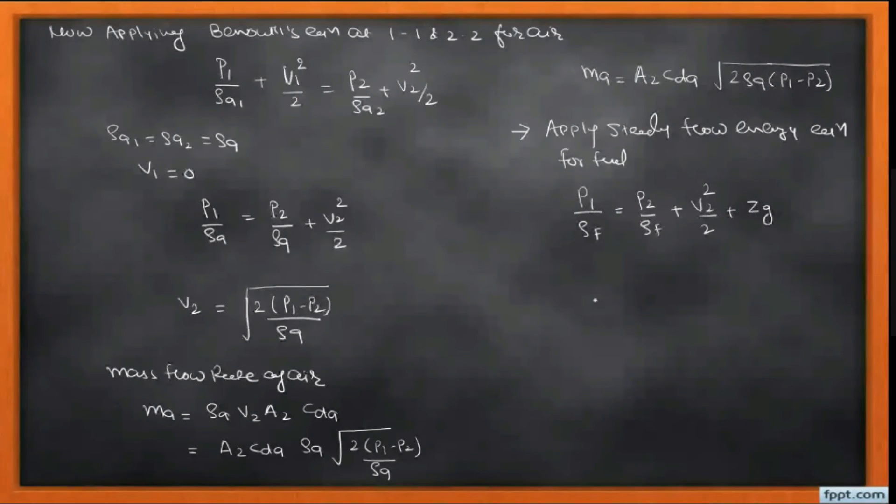Now we make the subject. This V indicates VF. So VF equals square root of 2(P1 - P2 - Z·g·ρF) divided by ρF.